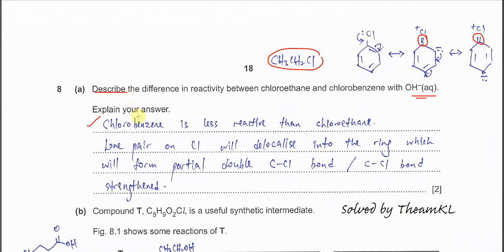Why is chlorobenzene less reactive? Because the lone pair on the chlorine will delocalize into the ring, which will form a partial double C-Cl bond. Or you can say that the C-Cl bond gets strengthened and is harder to break. Therefore, it is harder to undergo hydrolysis.